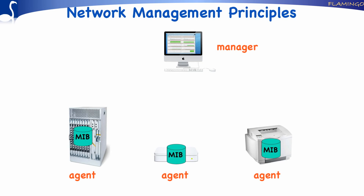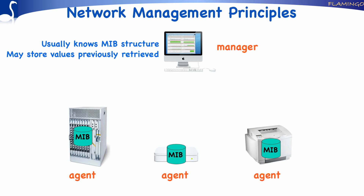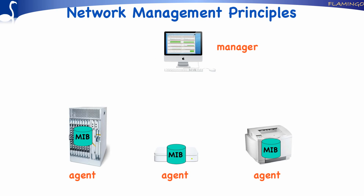MIBs are included in every agent and organized into so-called MIB modules. Some of these modules are implemented in every agent since they hold generic information applicable to all devices, for example, the IP address of the device or the time the agent is up. Other modules are only implemented in certain kinds of devices since they hold information specific for that particular kind of device, such as a forwarding table in a router or the toner level for a printer. The manager usually knows the MIB structure of the various agents, thus which management information is maintained by each agent. In addition, managers usually store previously retrieved management information to detect, for example, anomalies or to plot a router's outgoing traffic as a function of time.